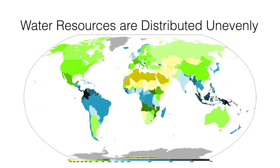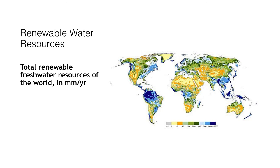This figure shows annual average precipitation worldwide in millimeters. Note that wet areas that support tropical rainforests occur along the equator, while major world deserts occur in zones of dry, descending air between 20 degrees and 40 degrees north and south latitude. This figure shows total renewable freshwater resources of the world in millimeters per year — one millimeter is equivalent to one liter of water per square meter — based on long-term averages for the years 1961 to 1990, computed by the Global Freshwater Model Water Gap.